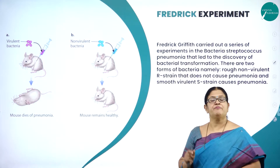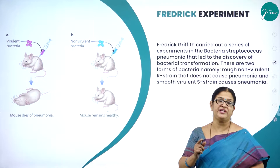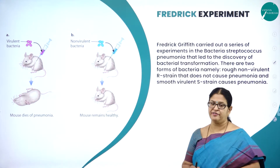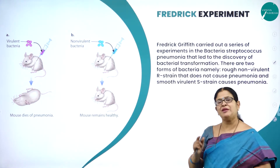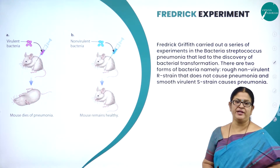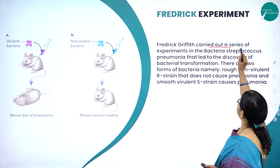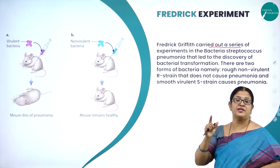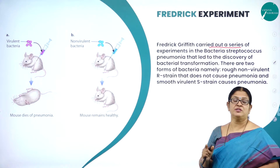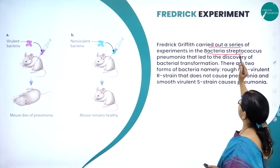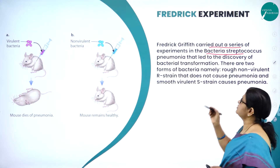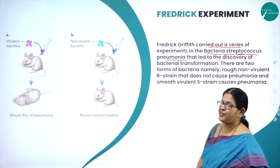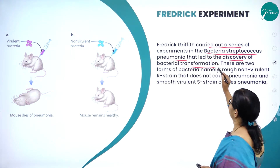With this experiment, Frederick wanted to prove that DNA is the transforming material. The transforming principle was put across by Frederick Griffith using mice as an example. He carried out a series of experiments in the bacteria Streptococcus pneumoniae, which causes the serious disease pneumonia, and that led to the discovery of bacterial transformation.